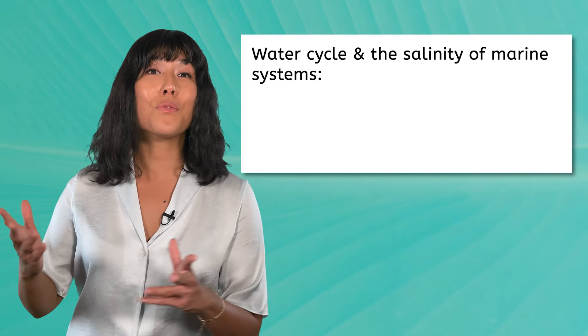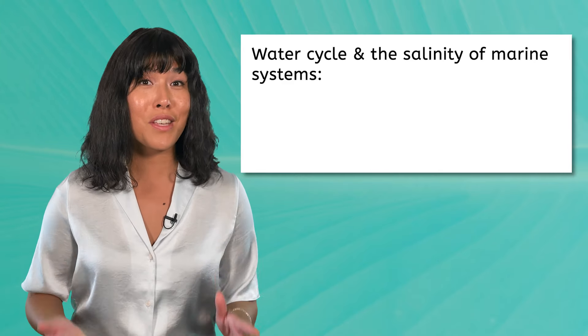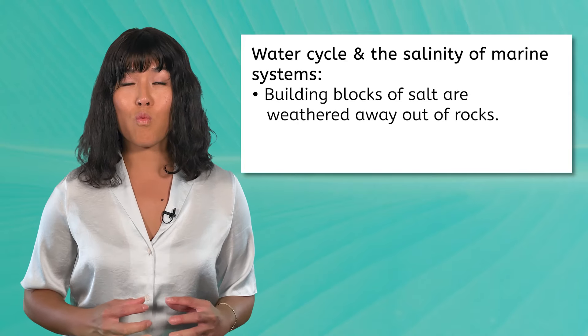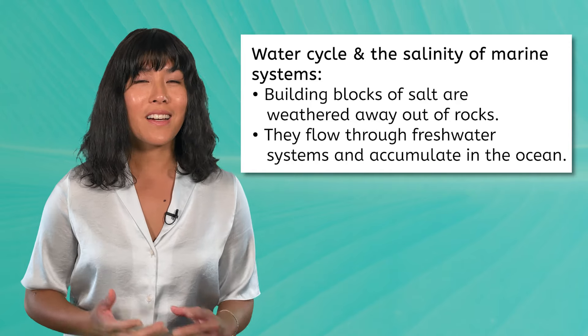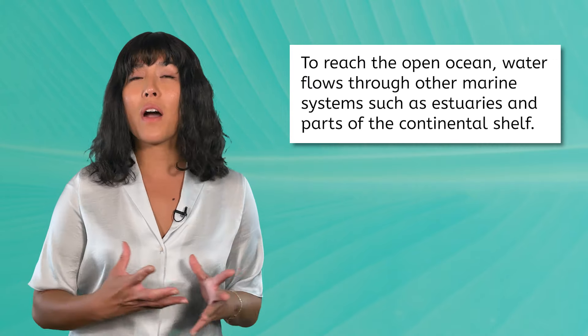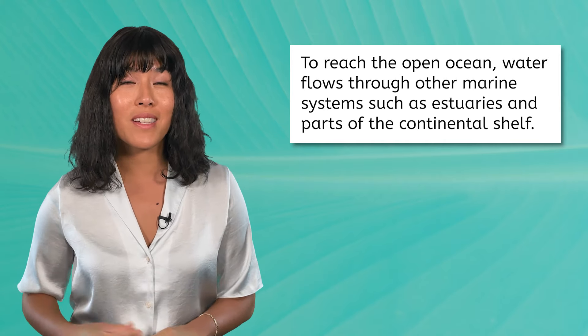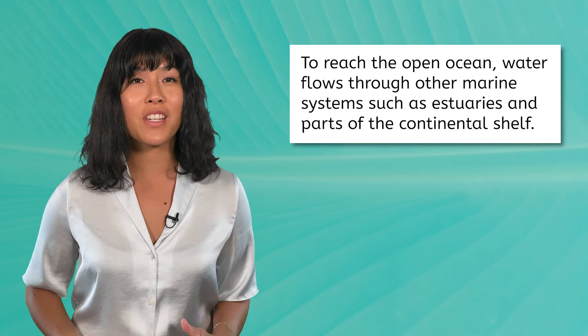As we went through the lesson today, we saw how the movement of water through the water cycle leads to the salinity or salt concentration of marine systems such as the ocean. When the building blocks of salt are weathered away out of rocks, they flow through various freshwater systems of Earth, finally collecting and accumulating in the ocean. To reach the open ocean, water flows through other marine systems such as estuaries and parts of the continental shelf. All of these marine systems support life and contribute to the functioning of their ecosystem. Until next time, remember — keep making waves as you dive in, explore, and keep learning! I'll see you next time!